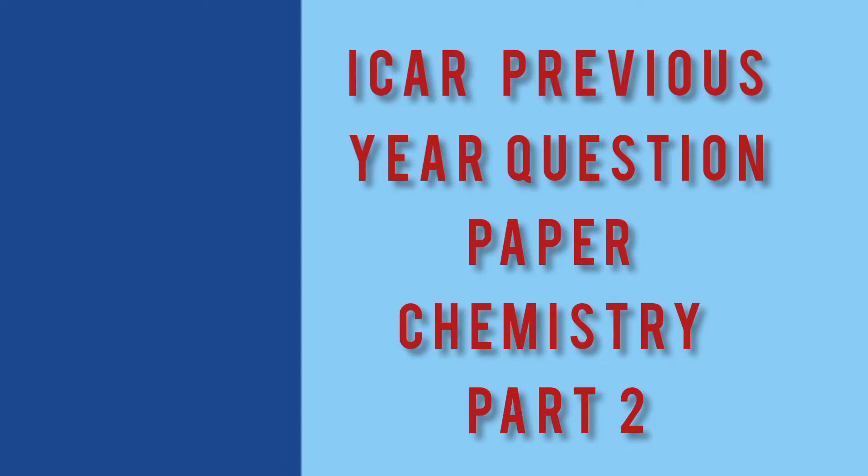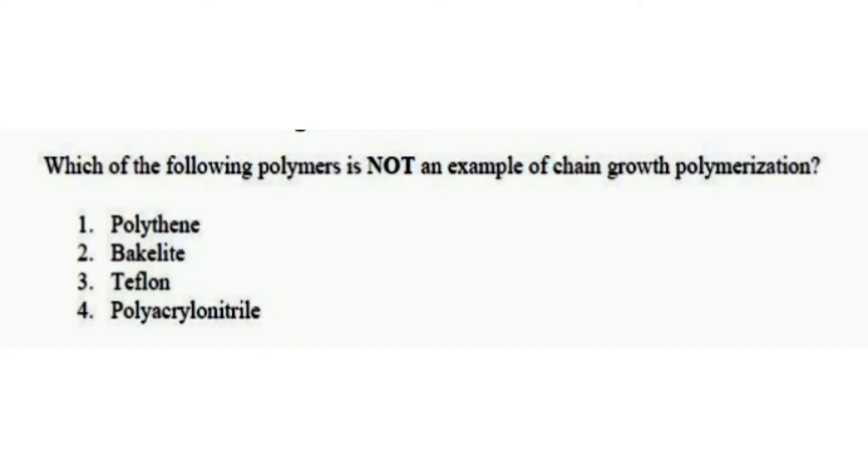The first part will be provided in the description box. Our first question is: which of the following polymers is not an example of chain growth polymerization? The options are polythene, bakelite, teflon, polyacrylonitrile. From the options given below, the right one is option two, bakelite.